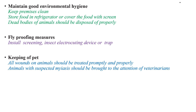Another measure is maintaining good environmental hygiene, such as keeping premises clean, storing food in the refrigerator or covering food with screen, and disposing of dead animal bodies properly. Other fly-proofing measures include installing screening and insect electrocuting devices or traps. The care of pets is also important — all wounds on animals should be treated promptly, and animals with suspected myiasis should be brought to the attention of veterinarians.